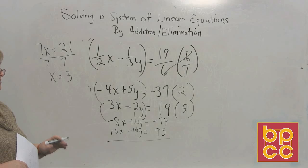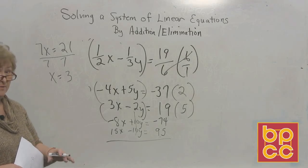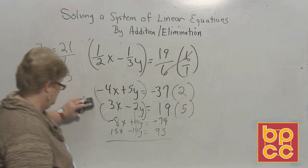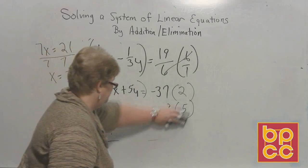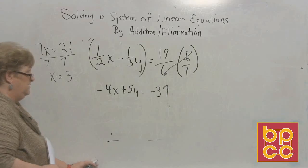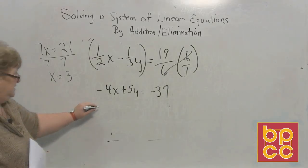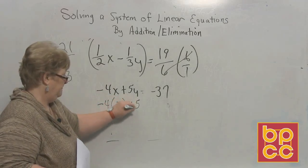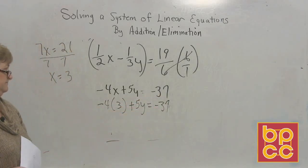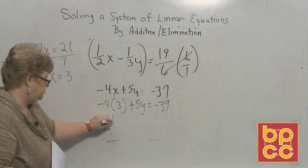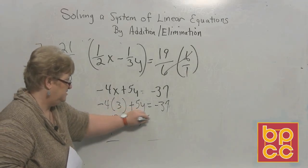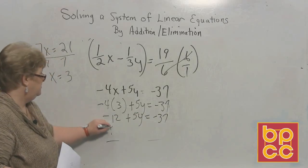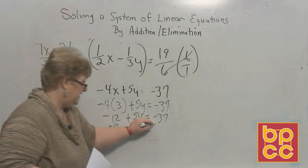And if that's the case, all we have to do is go back into one of the original problems using whole numbers and sub in x is 3 to get y. I'm going to erase all this, and I'm going to go back into this one, and I'm going to let x be 3. A negative 4 times 3 plus 5y is equal to a negative 37. Negative 4 times 3 is a negative 12 plus 5y is equal to a negative 37. We need to move the 12 to the other side. So let's do a plus 12. That clears and a plus 12.